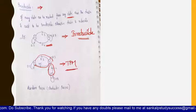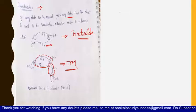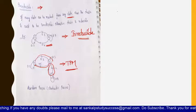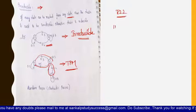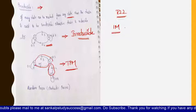These are the different types of states we have learnt: irreducible, ergodic, absorbing, periodic, aperiodic, transient, and recurrent. These are very important and can be given for one-mark questions in the external exams, as per the R22 syllabus. Thank you for watching the video.